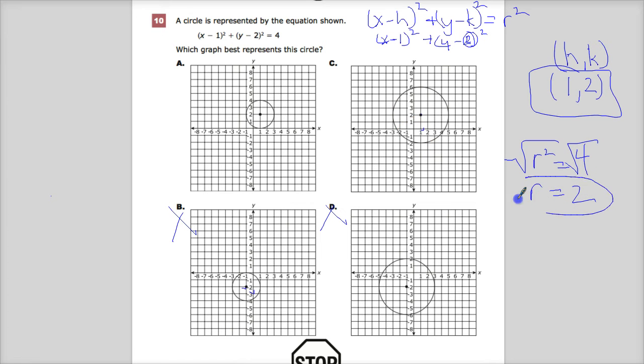This is the radius I'm looking for. However, this circle has a radius of 1, 2, 3, 4, so that's out. But here we go, 1, 2, and it has a point at (1, 2) and a radius of 2 on all sides. We're good to go. So my answer to number 10 is A.